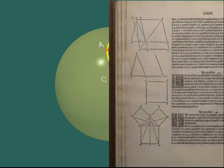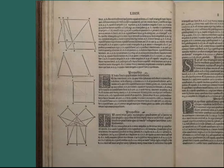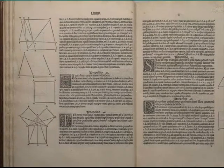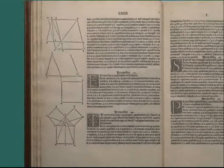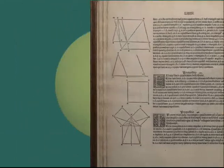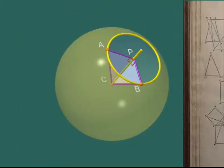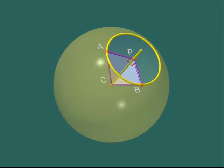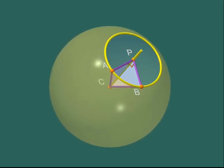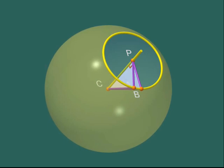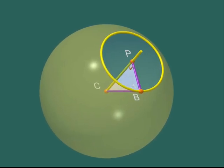But remember Pythagoras' theorem. Since our two right angle triangles have two sides of the same length, their three sides must have the same length. Hence, we have proved that P-A and P-B have the same length. That is, that A and B are on the same circle with centre P, in the blue plane.